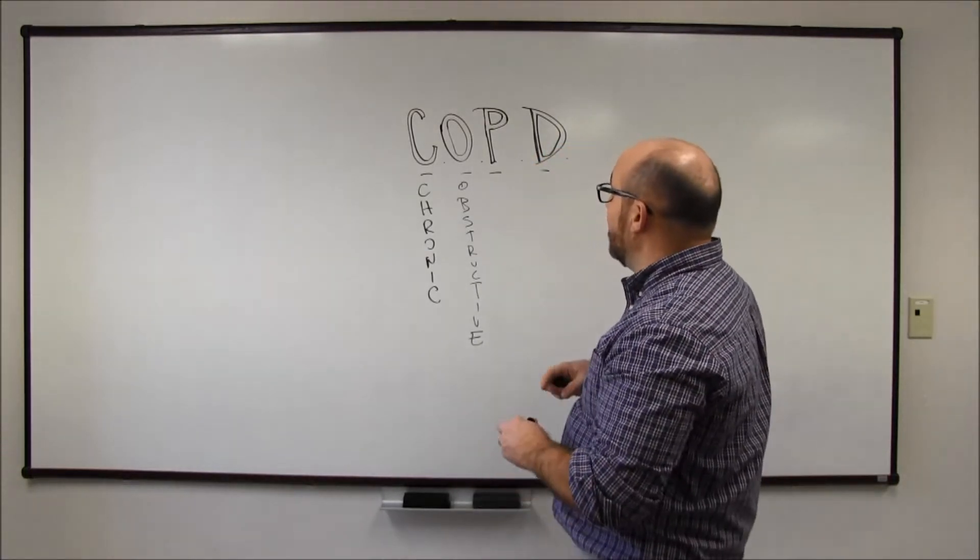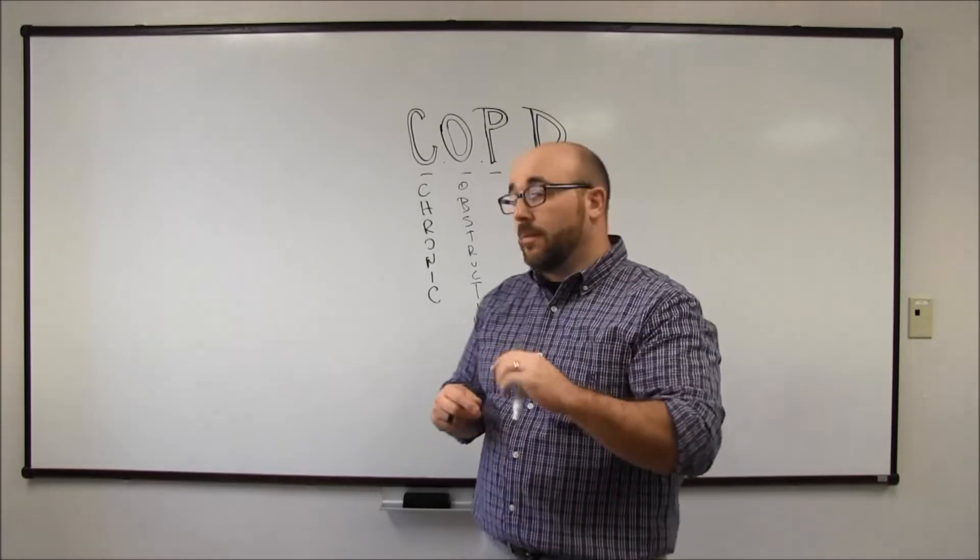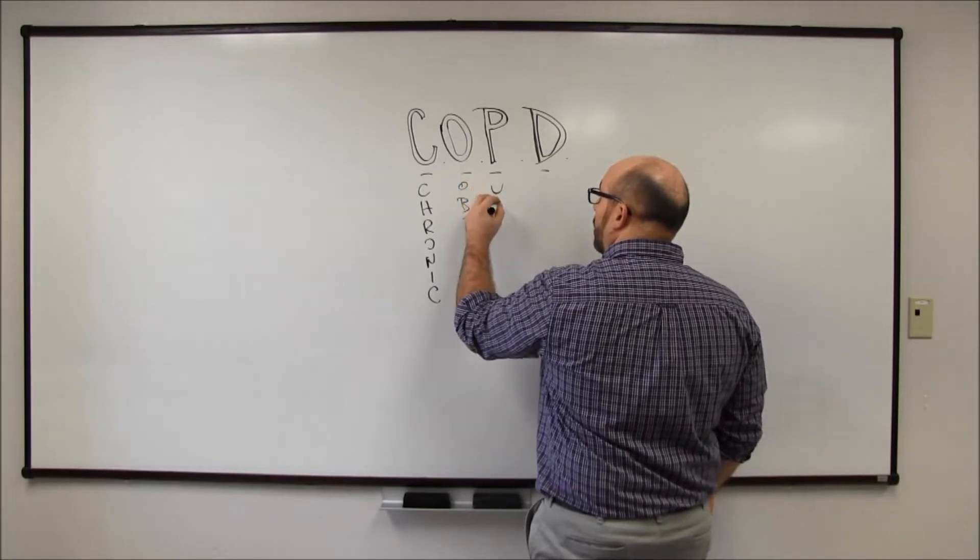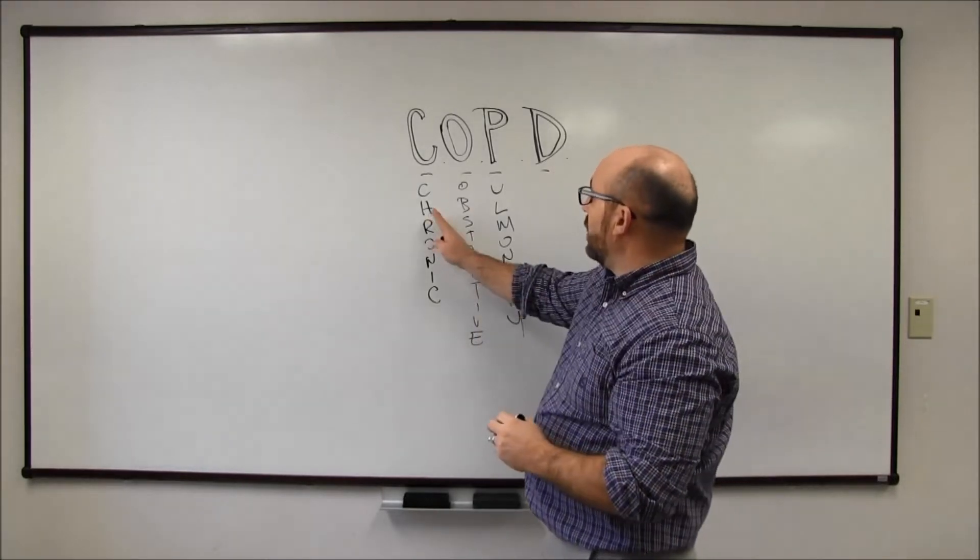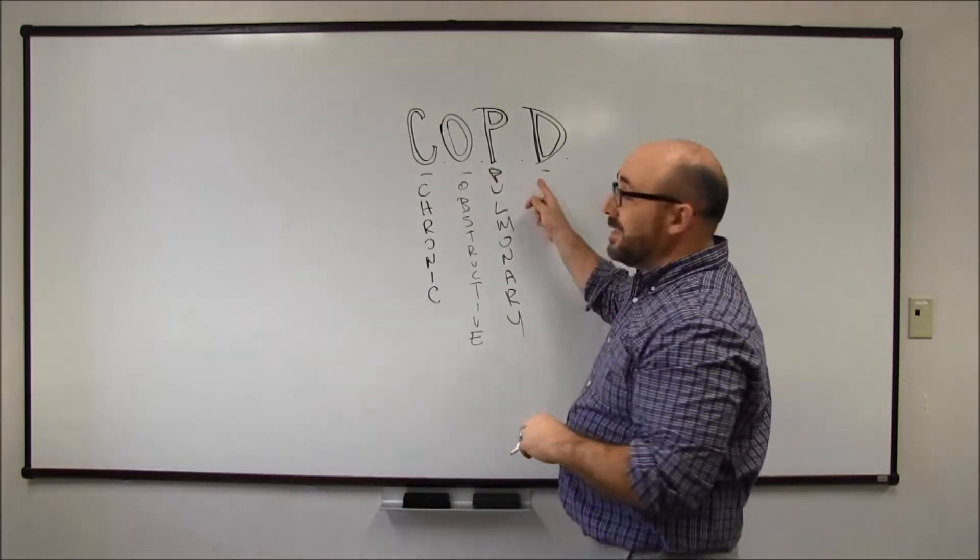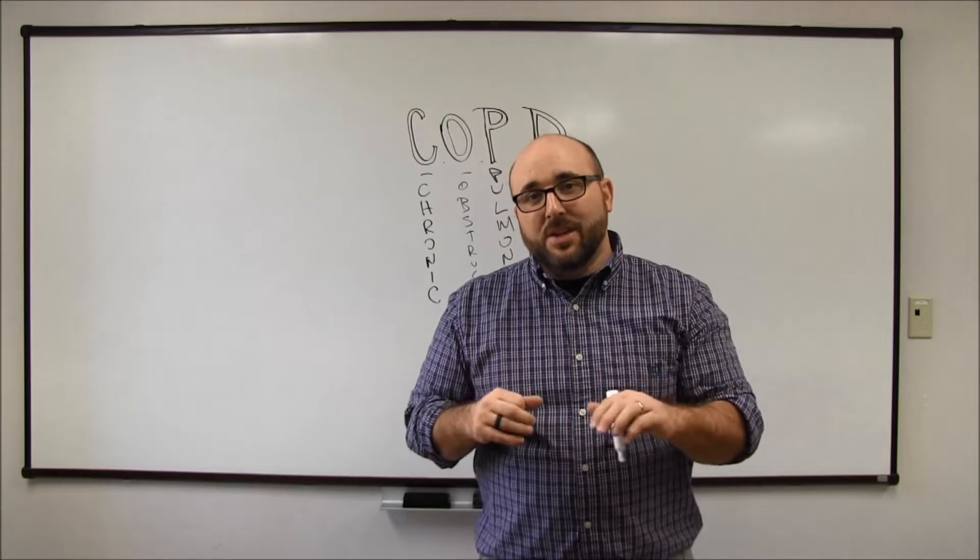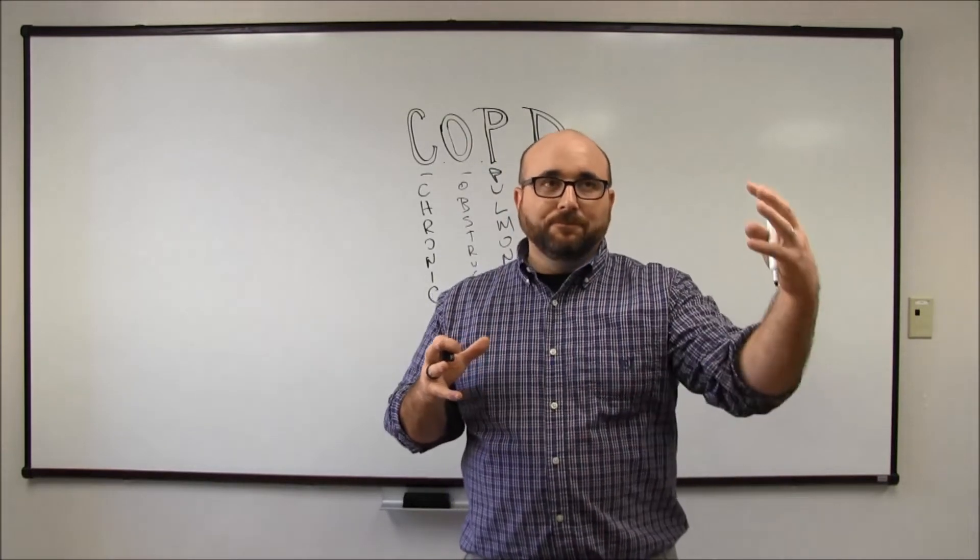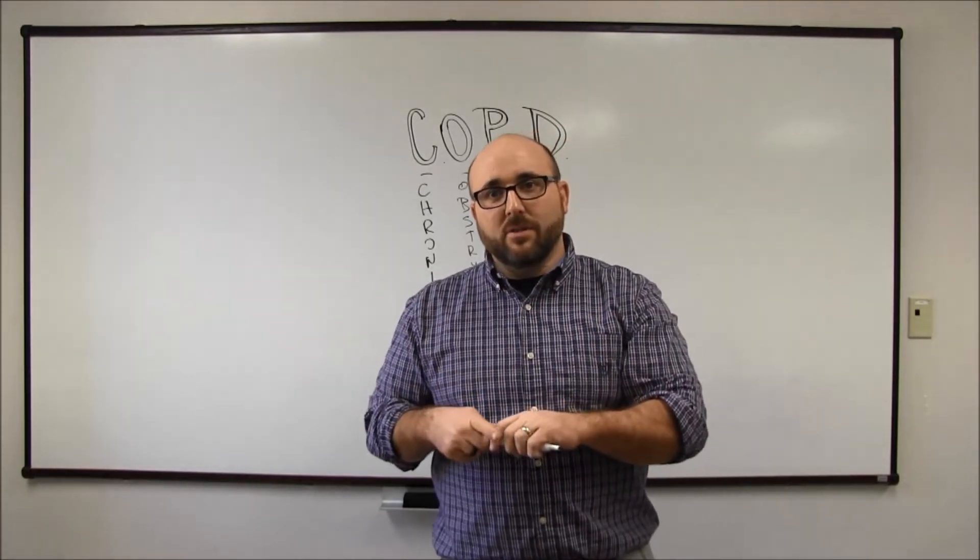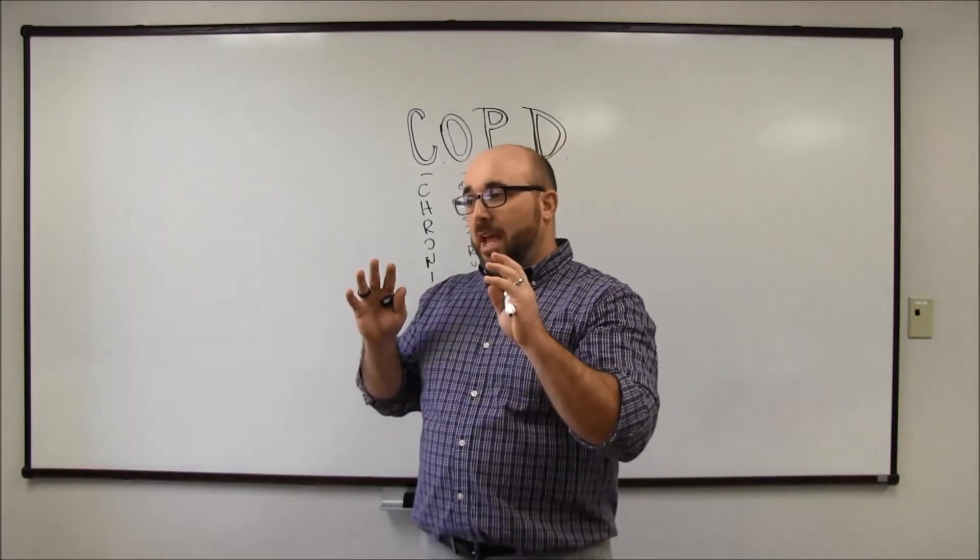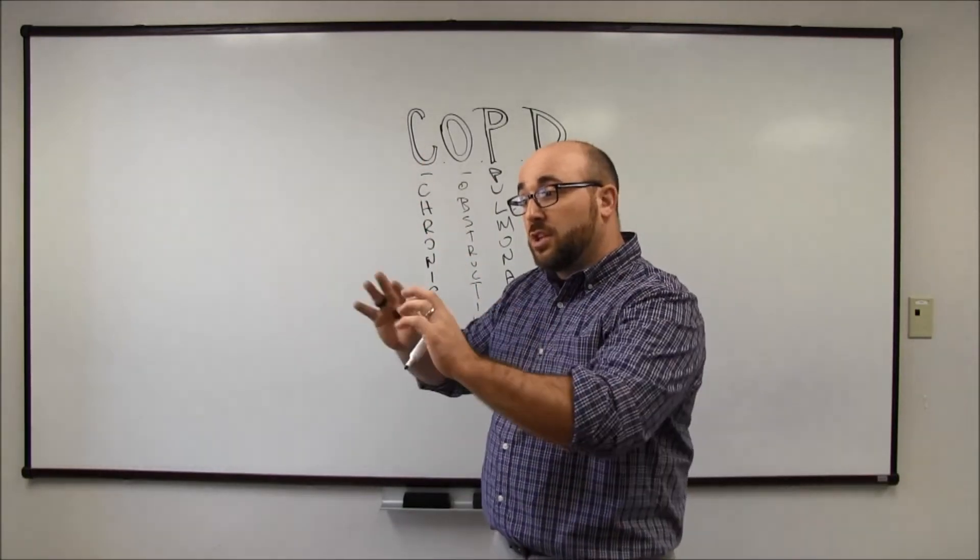The next one is pretty easy. P stands for pulmonary. Pulmonary has to do with the lungs. And the last one is D, which we're going to call disease. So disease is a group of symptoms and signs together that cause something. So this is a pulmonary disease, but it's chronic over a long period of time and it has obstruction to flow.